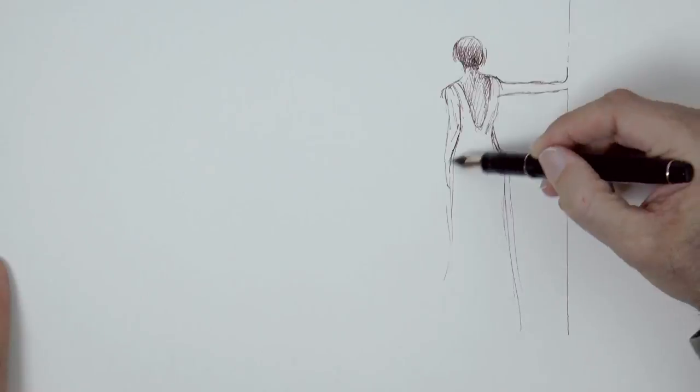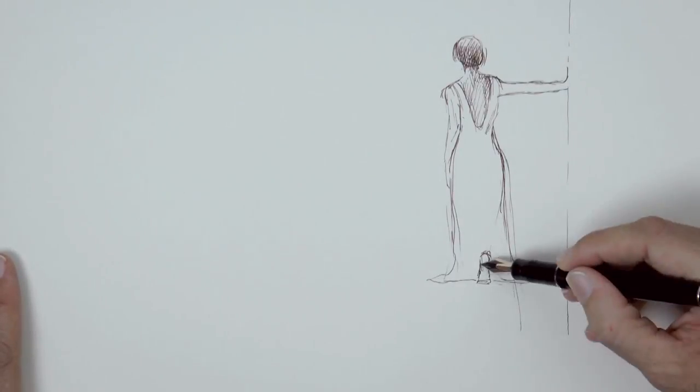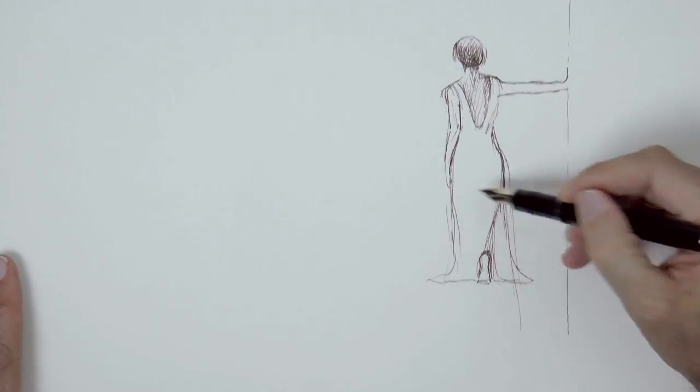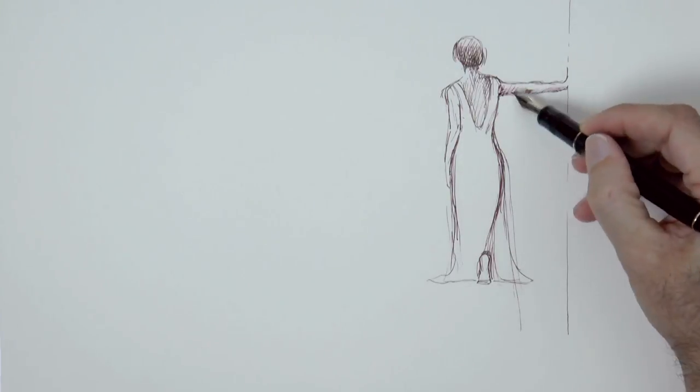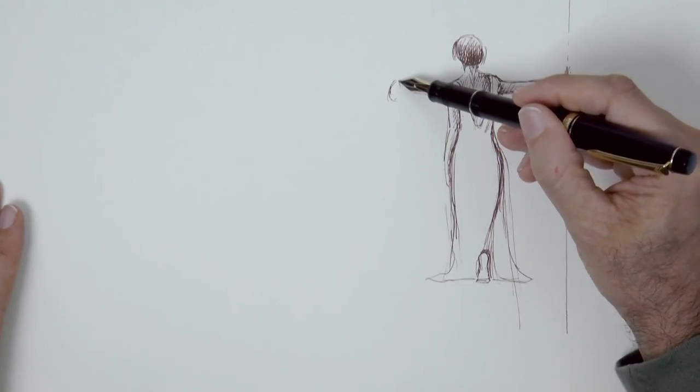She will be leaning slightly on a wall, or actually on an entrance. And we start shading by hatching and cross hatching. She will have a foot sticking out of the dress with the heel up and the toes on the ground.